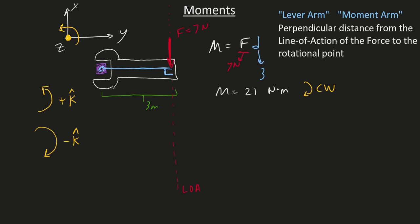In our case, this force wants to rotate the wrench clockwise. I take my right hand, curl my fingers in the direction of this rotation, and my thumb is pointing downward into the screen. So this is a 21 Newton-meter moment in the negative Z direction.